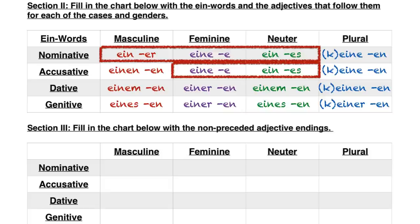Now, what happens if there's not an ein-word in there? So if you want to say something like fresh bread or good cheese — you might say 'good cheese is always great with water' — that's not going to be preceded by 'the good cheese' or 'a good cheese,' but just 'good cheese.' And those are going to be those non-preceded adjective endings. First thing you'll notice here is that we have ER, E, ES, and E in the nominative case.